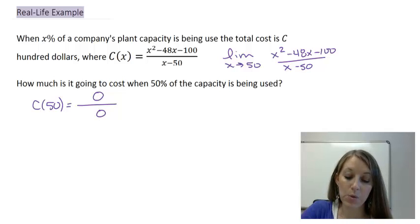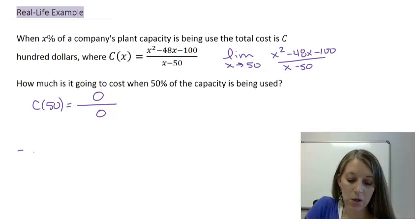that tells us we'd have to do more work. Of course, the more work here is to factor this guy. So that's equivalent to the limit of x approaching 50.